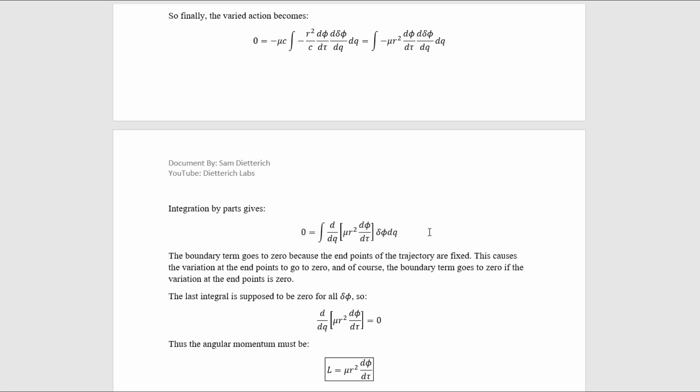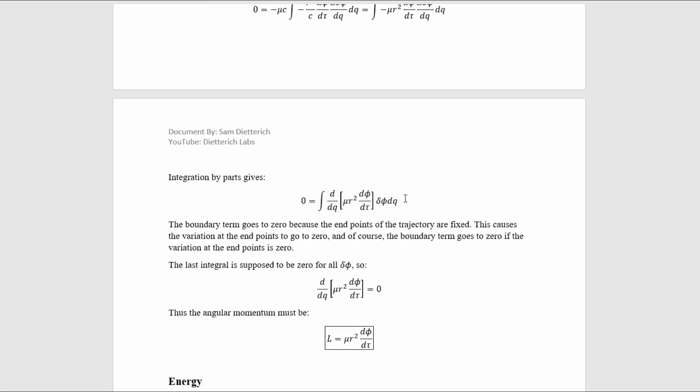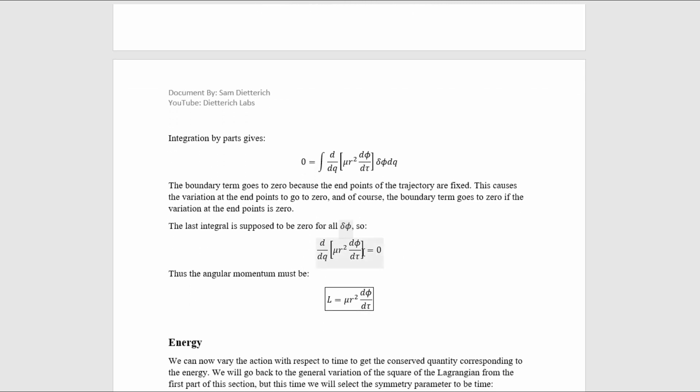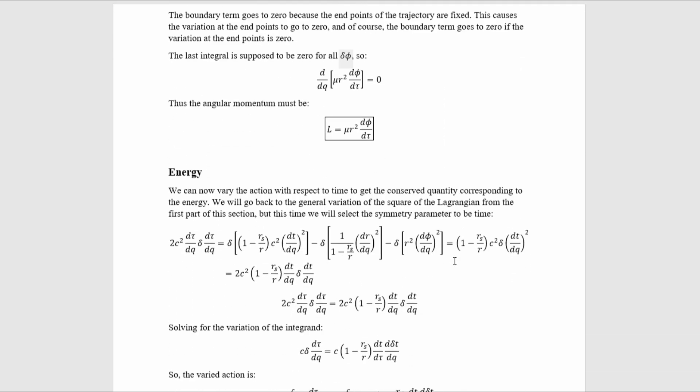And you can see we're getting close to getting the constant of motion. Now remember, the boundary term here as a result of the integration by parts goes to zero because the endpoints of the trajectory are fixed. This causes the variation at the endpoints to go to zero, and of course the boundary term goes to zero if the variation of the endpoints is zero. This integral is supposed to be zero for all integration bounds and for all delta phi, so we ultimately have this equation, and therefore we can see the angular momentum must be that.